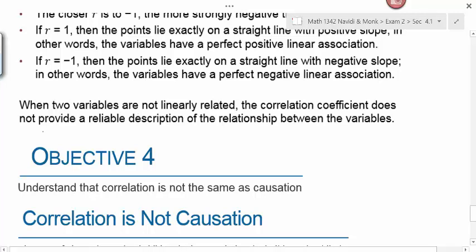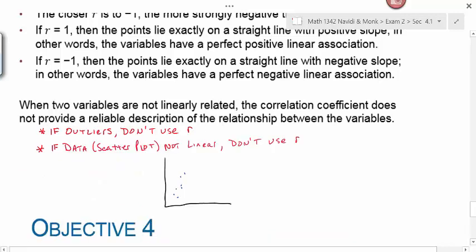When two variables are not linearly related, the correlation coefficient does not provide a reliable description of the relationship. If you have outliers present, we don't want to use r. If your data are not linear, you don't want to use r. If you have a scatterplot that looks like this, that's not a linear relationship. You could calculate r but you shouldn't use it because r is for a linear relationship. You would probably get r close to 0 because a horizontal line would fit through these data better, but actually a quadratic function would fit even better.